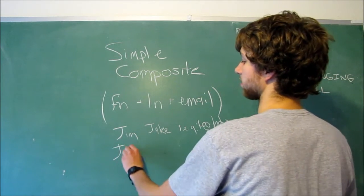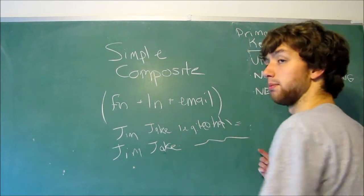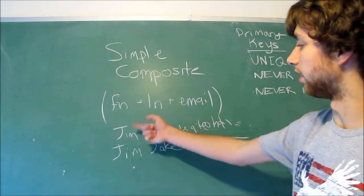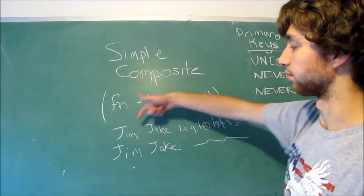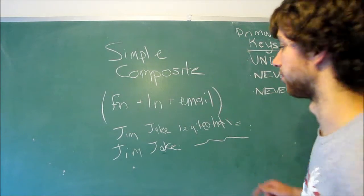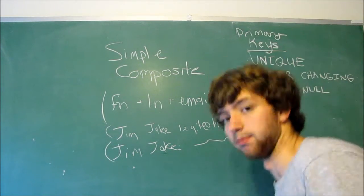And then we could have another one with the same exact name, Jim, Jake. And we could have a different email. Well, these two are still separate. They're unique because the combination of the three are unique. Jim and Jake repeat, but the email is different. So these as a whole are different values for primary keys.